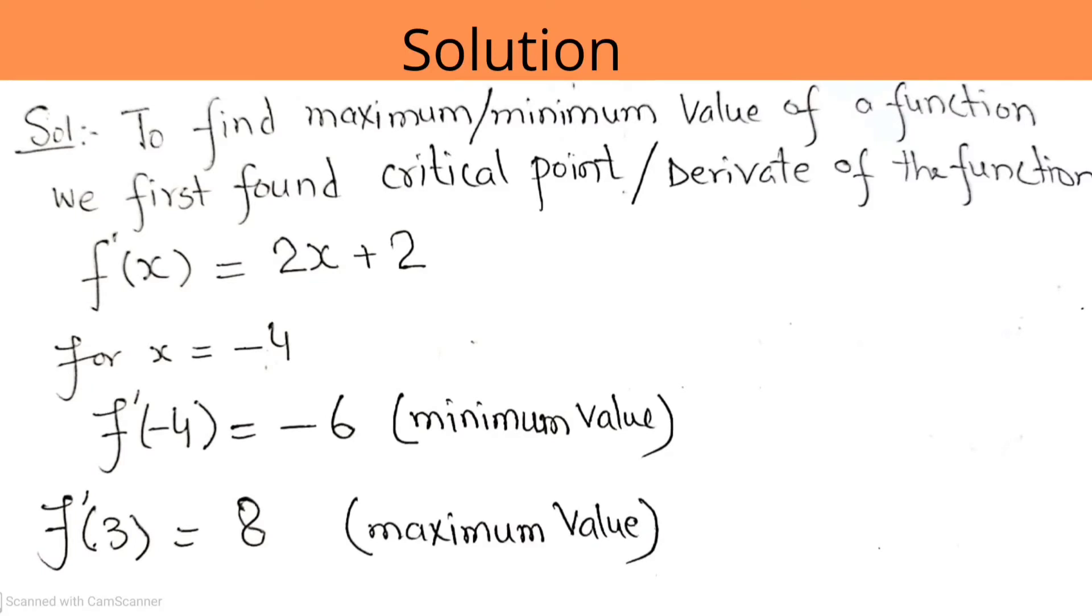Now we check the solution for this question. We know that to find the maximum and minimum value of the function, we first find the critical point, or you can say we have to take the derivative of that function. So f'(x) = 2x + 2. Now we put the values: for minimum we get -6, and for maximum value when x ≤ 3, we get the answer 8. So correct answer is B.